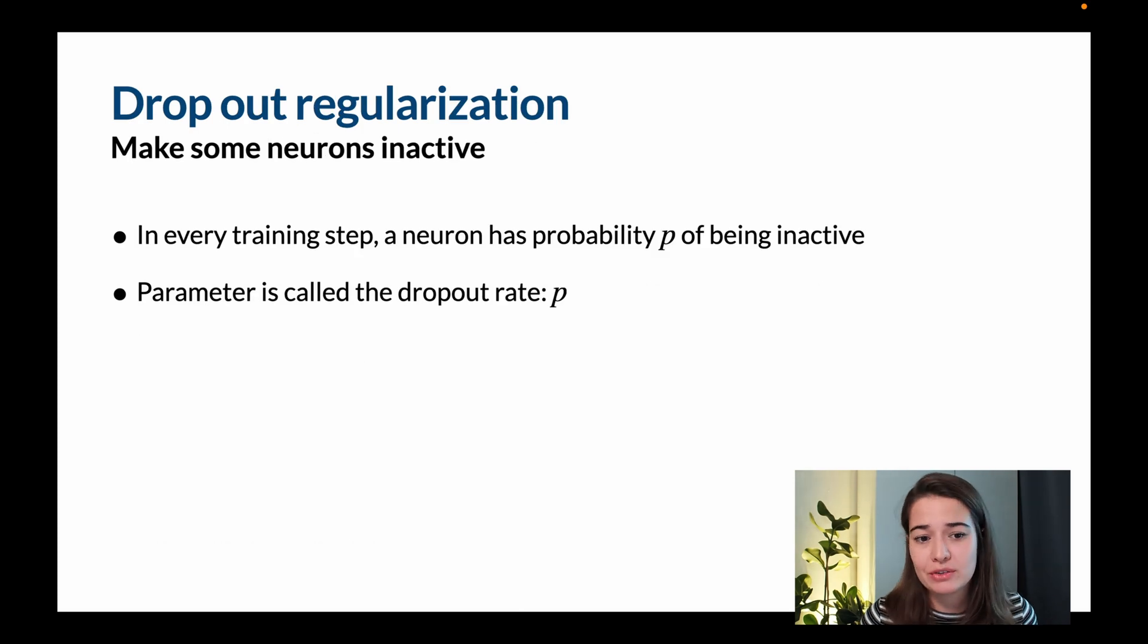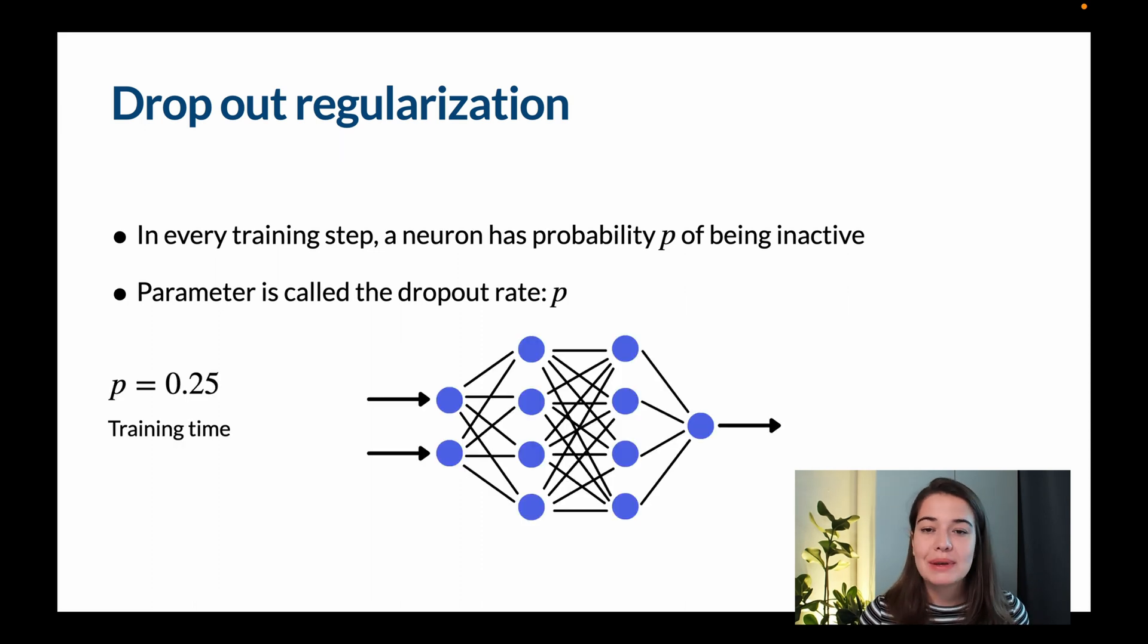Then we have dropout regularization. What we do here is in every training step, each neuron has a chance of p of being inactive, a probability p of being inactive. And that is called a dropout rate. It is something, again, we need to determine before we start training the network. Basically what happens is, let's say we have this network, we have two hidden layers, and we have four neurons each.